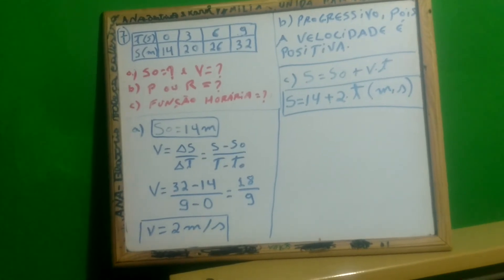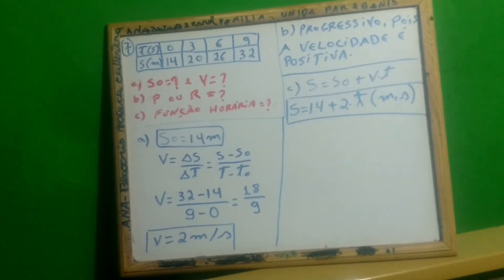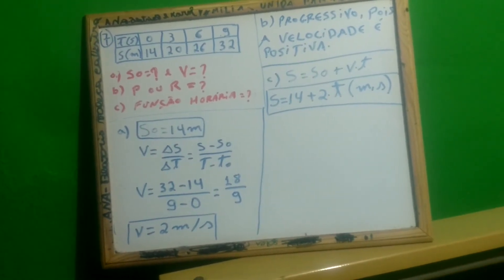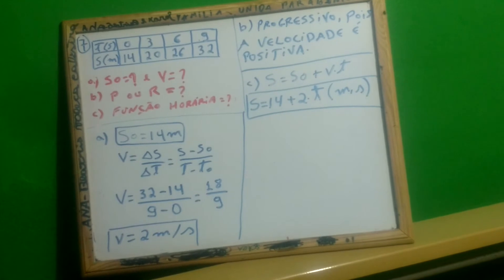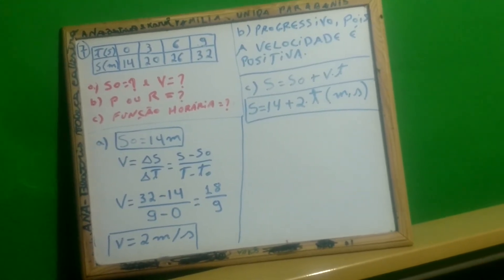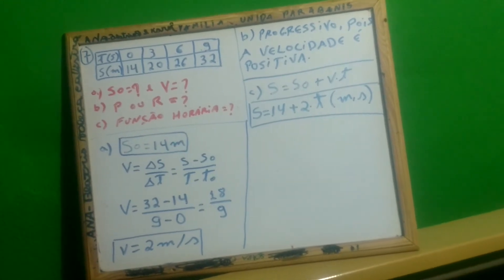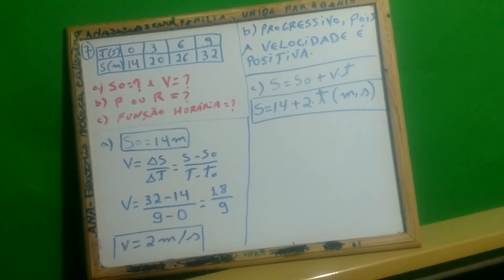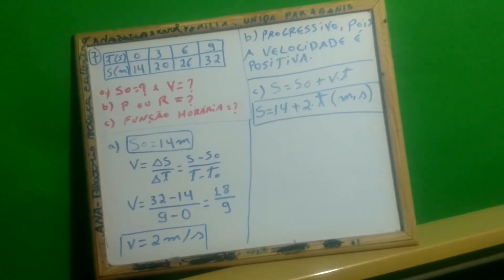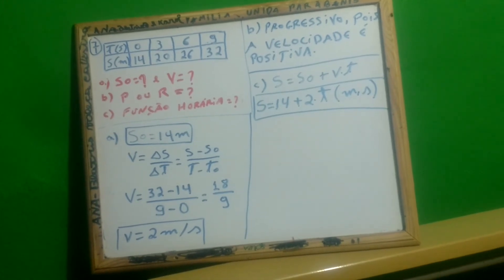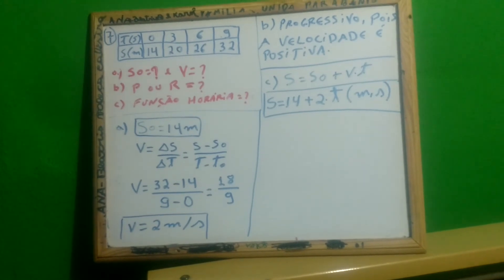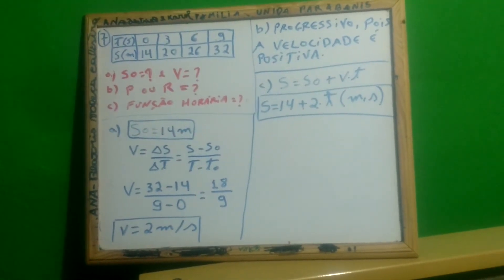Olhando para a tabela, nós temos que a posição final corresponde a 32 metros e a posição inicial 14 metros. Então, vai ficar a velocidade igual a 32 menos 14, o tempo final é 9 e o tempo inicial é 0. Então, 32 menos 14 dá 18, e 9 menos 0 dá 9. Então, a velocidade vai ficar 18 dividido por 9, que dá 2 metros por segundo.